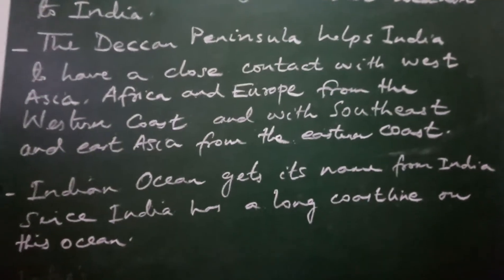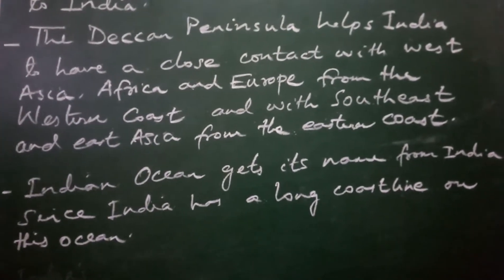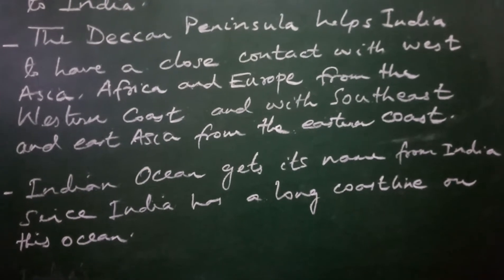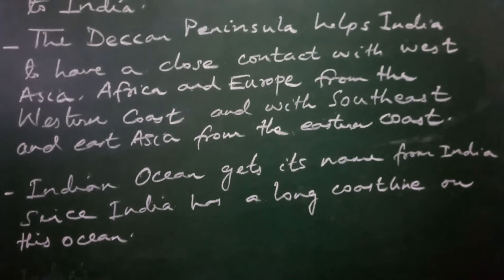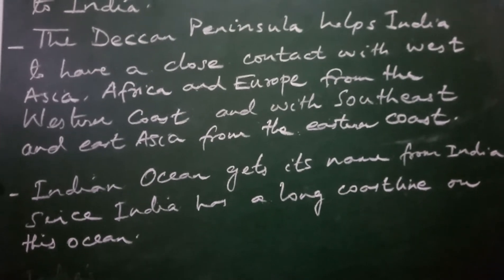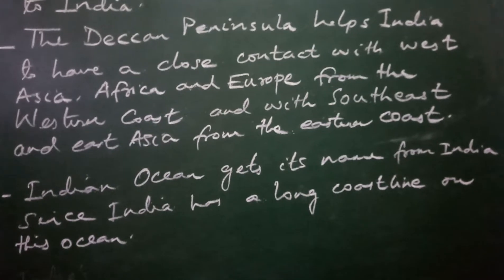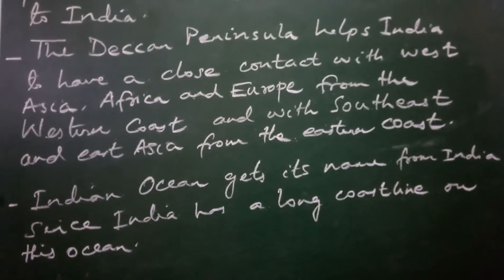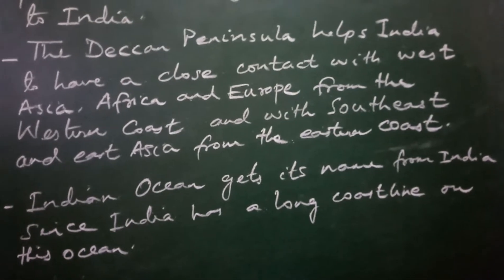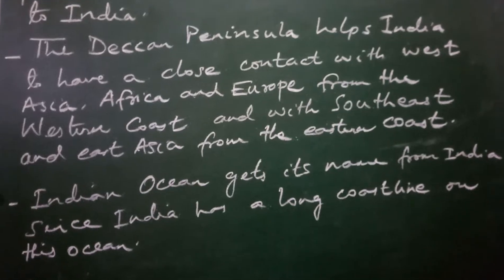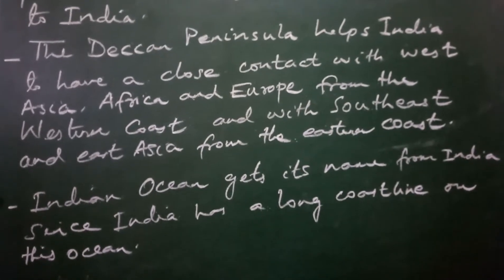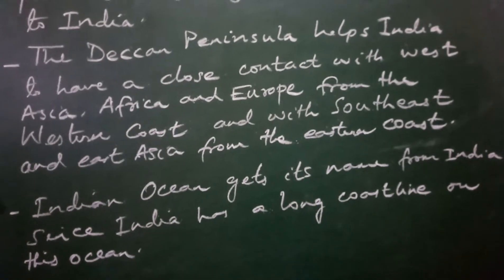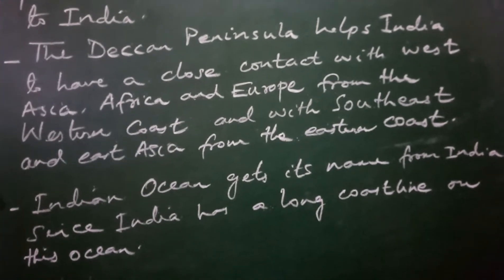India has a larger share in the Indian Ocean, and that is why an ocean is named after the country India. The Indian Ocean gets its name from India because India has a large coastline on this ocean. No other country in the world has such importance — no other ocean in the world has been named after a country.